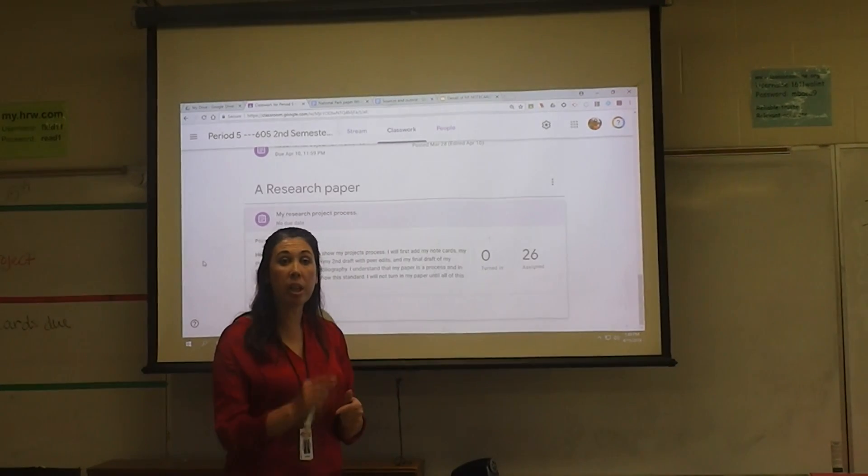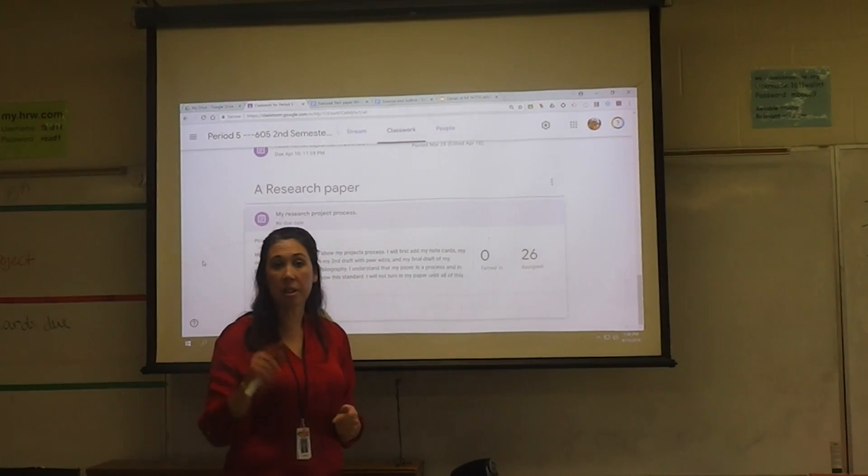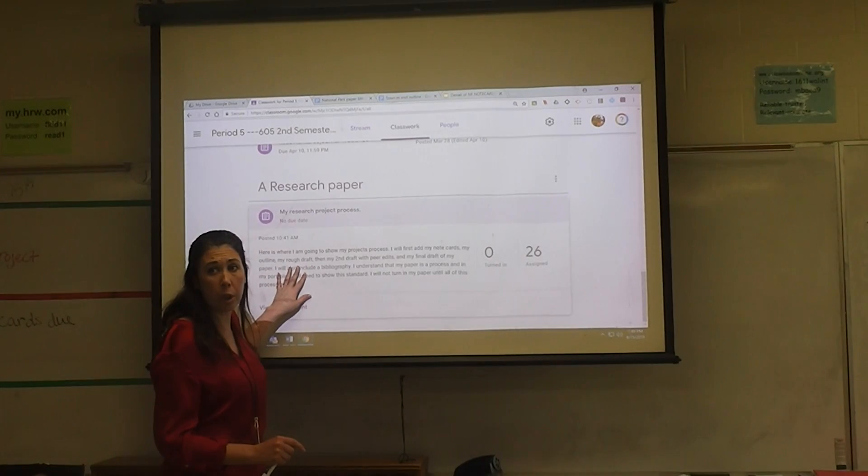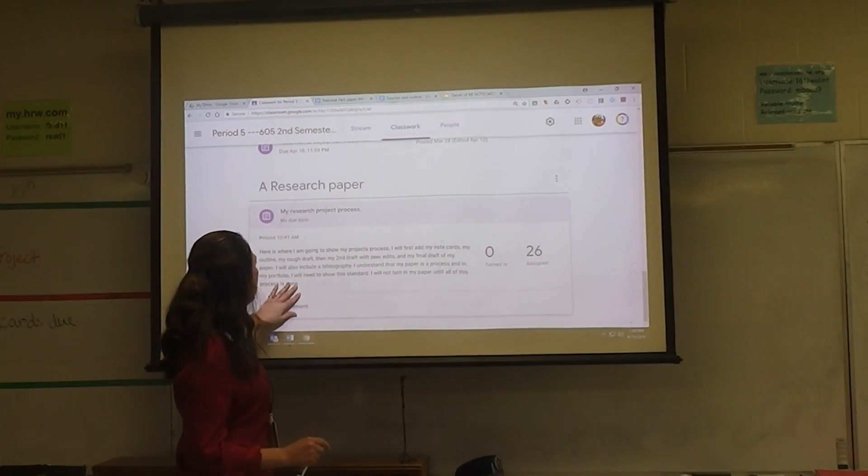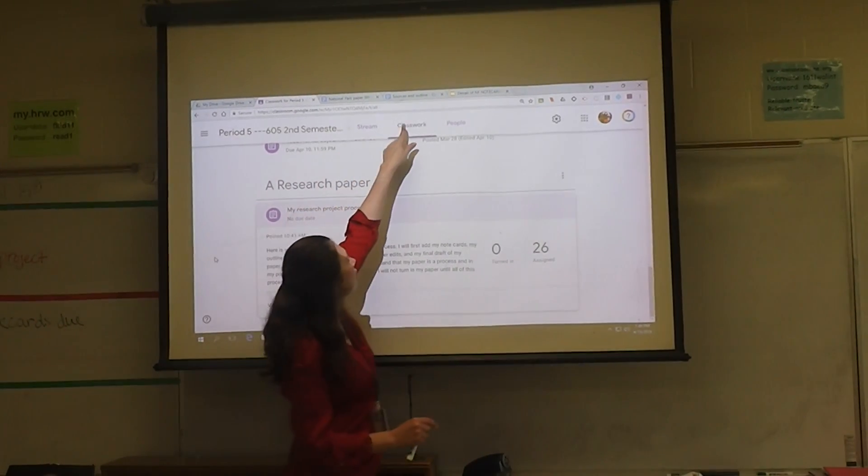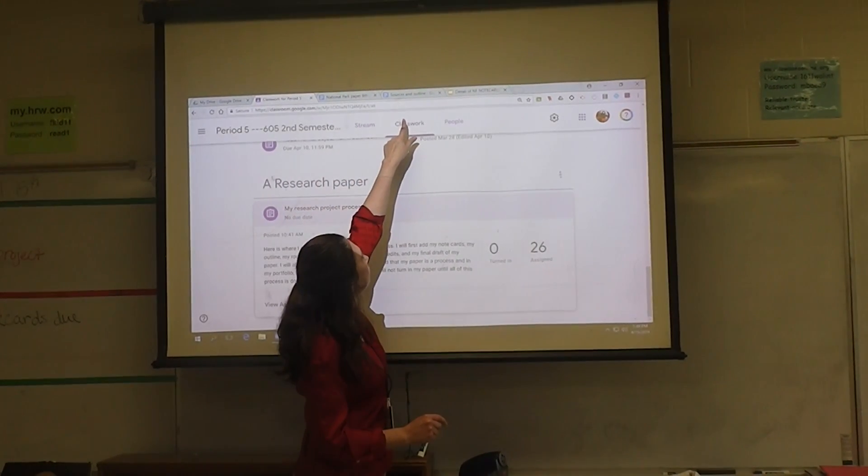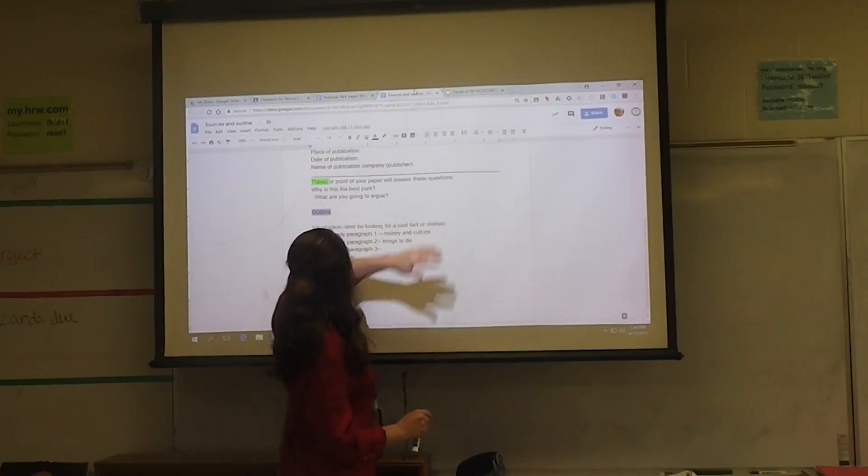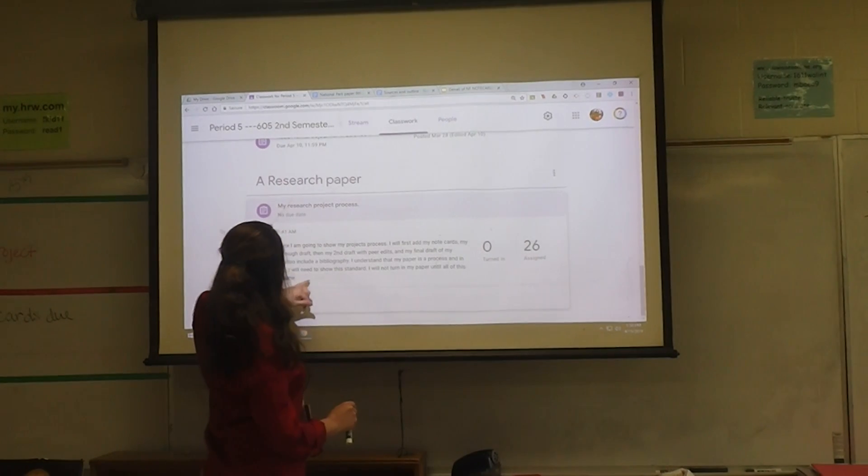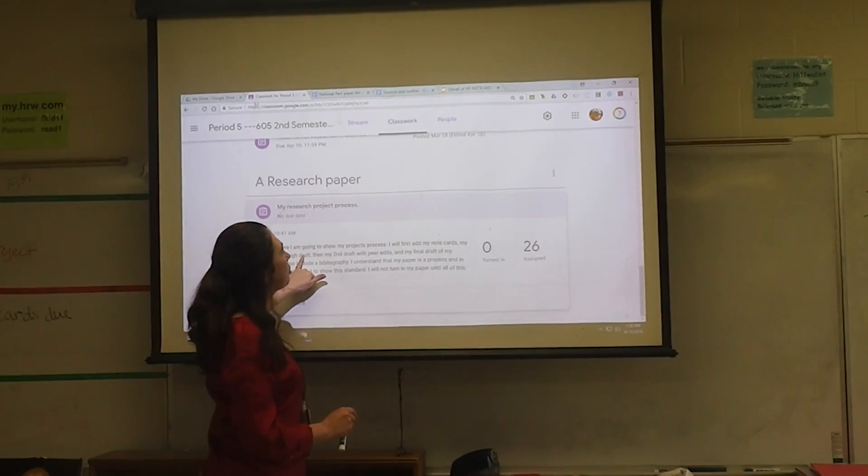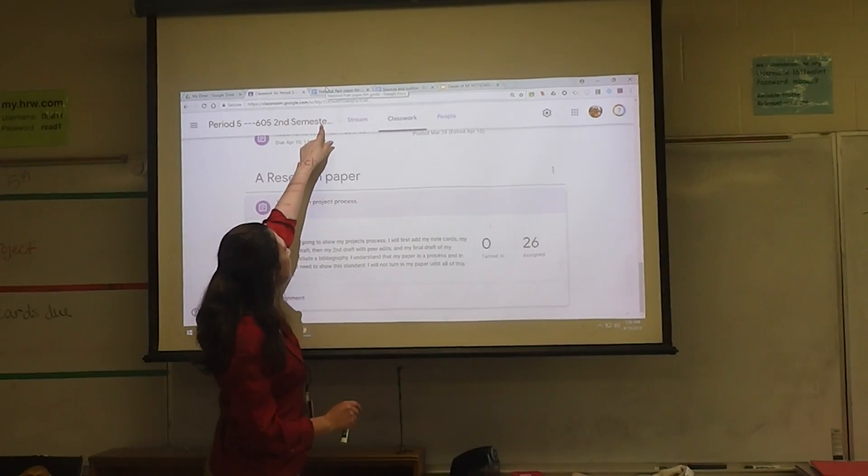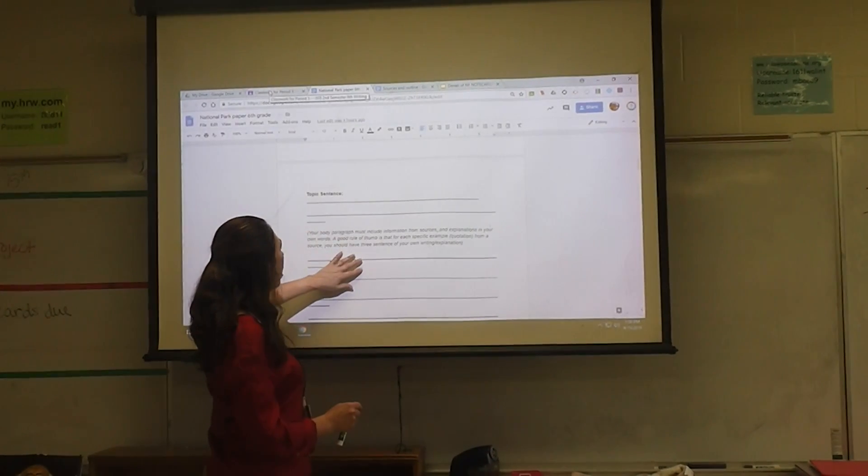So when we make our portfolio which is coming up and we go to that standard that says that we understand the process of writing, here's all your stuff you're going to need for your portfolio right here. So in here we're going to put our note cards, our outline - can you go back to that one? - which was that. Go back to classwork. It's going to have your rough draft which is going to be that right there, or maybe it's from what you wrote, but that's going to be in there.